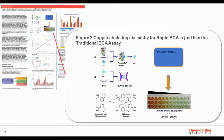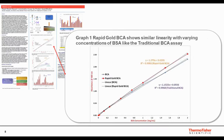This works just like the BCA. Protein complexes with copper 2+ to form a protein-copper complex, reducing copper 2+ to copper 1+. The BCA chelator then chelates to the reduced copper and the color changes from green to purple, which can be read at an absorbance of 562 nanometers. With Rapid Gold BCA, we have a proprietary chelator that reacts the same way with reduced copper, but instead of a violet color it forms an orange-brown color, read at 480 nanometers. These results are obtained at room temperature in 5 minutes.